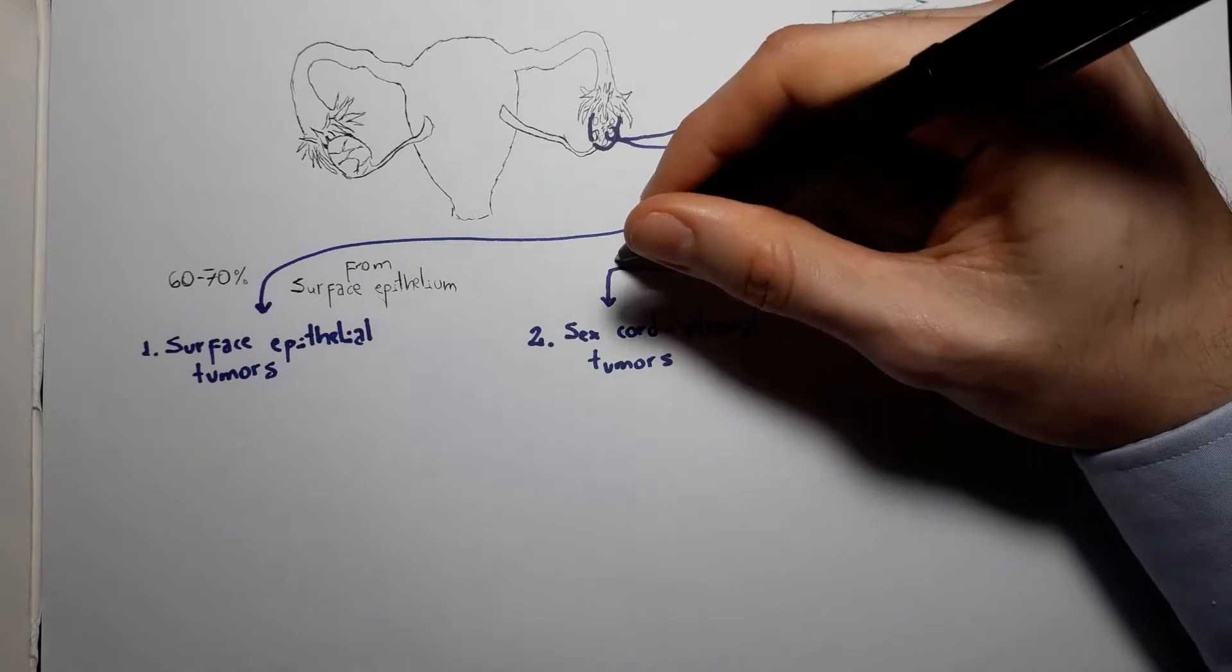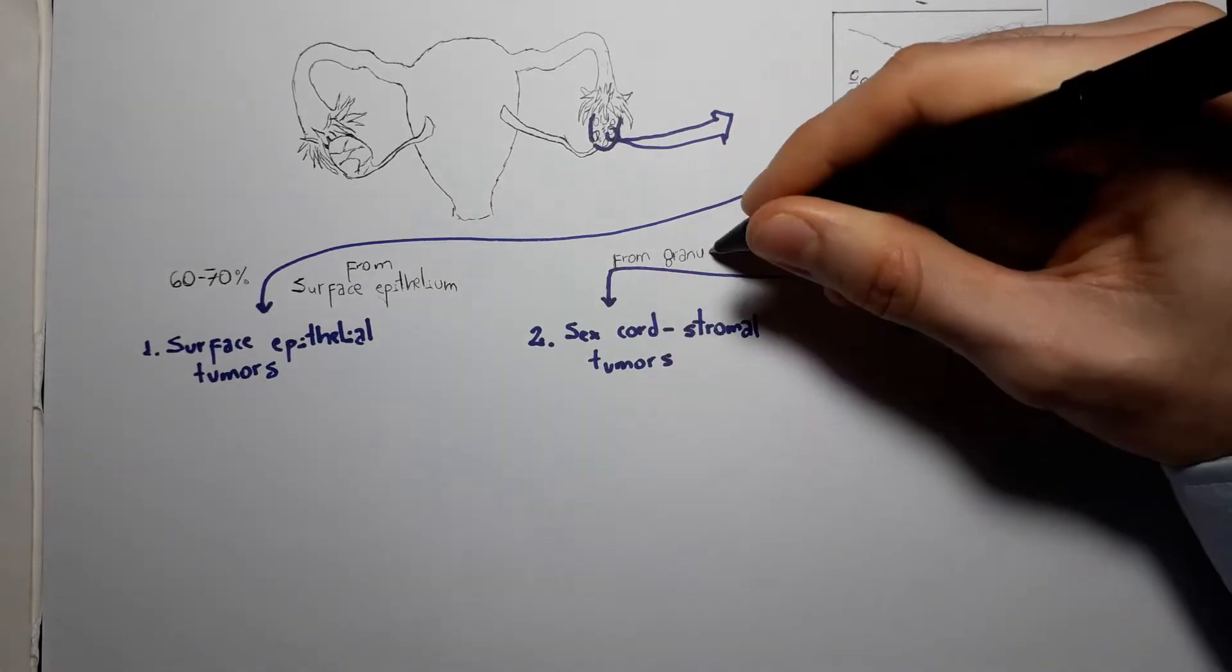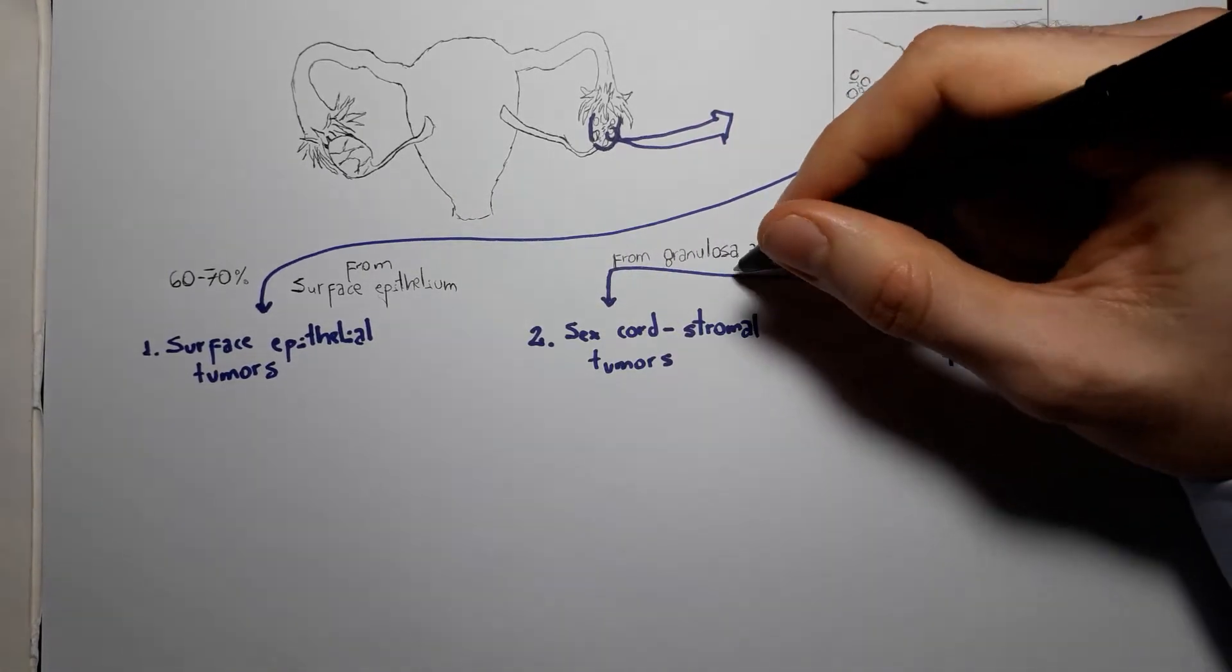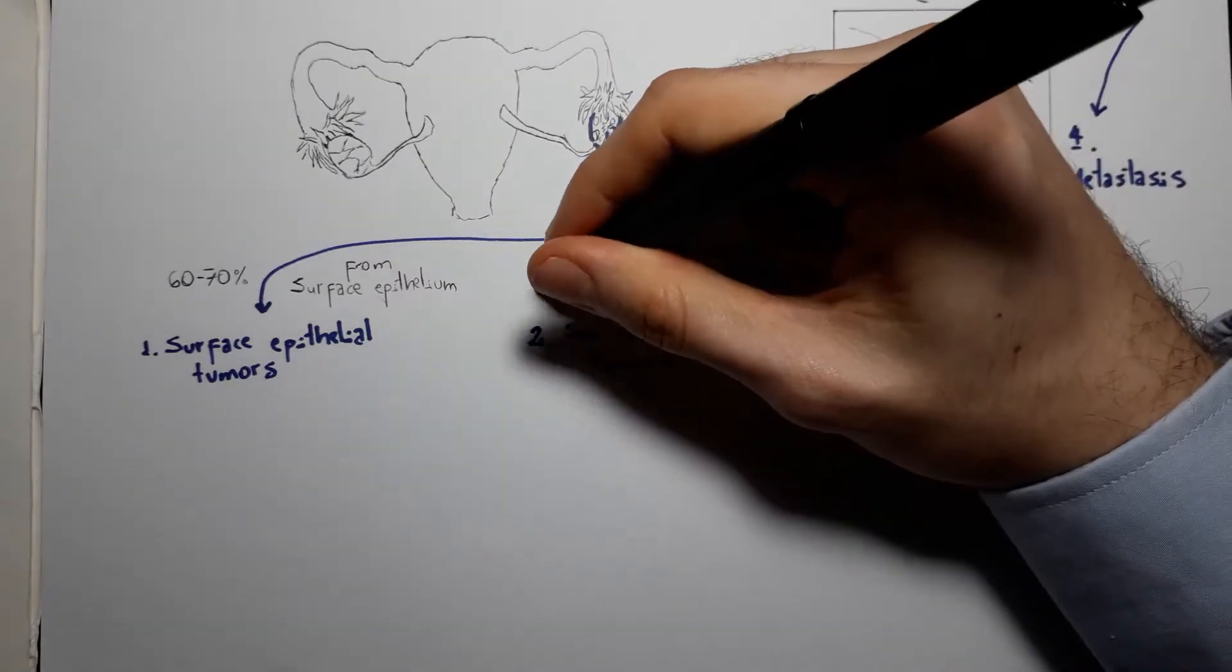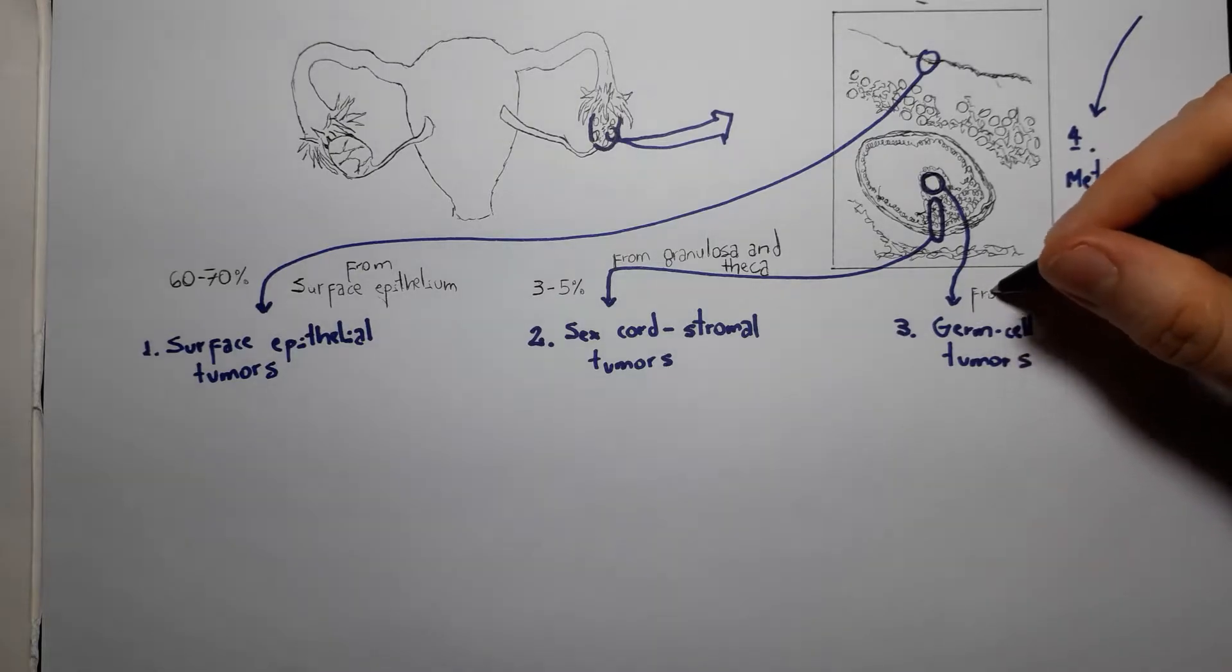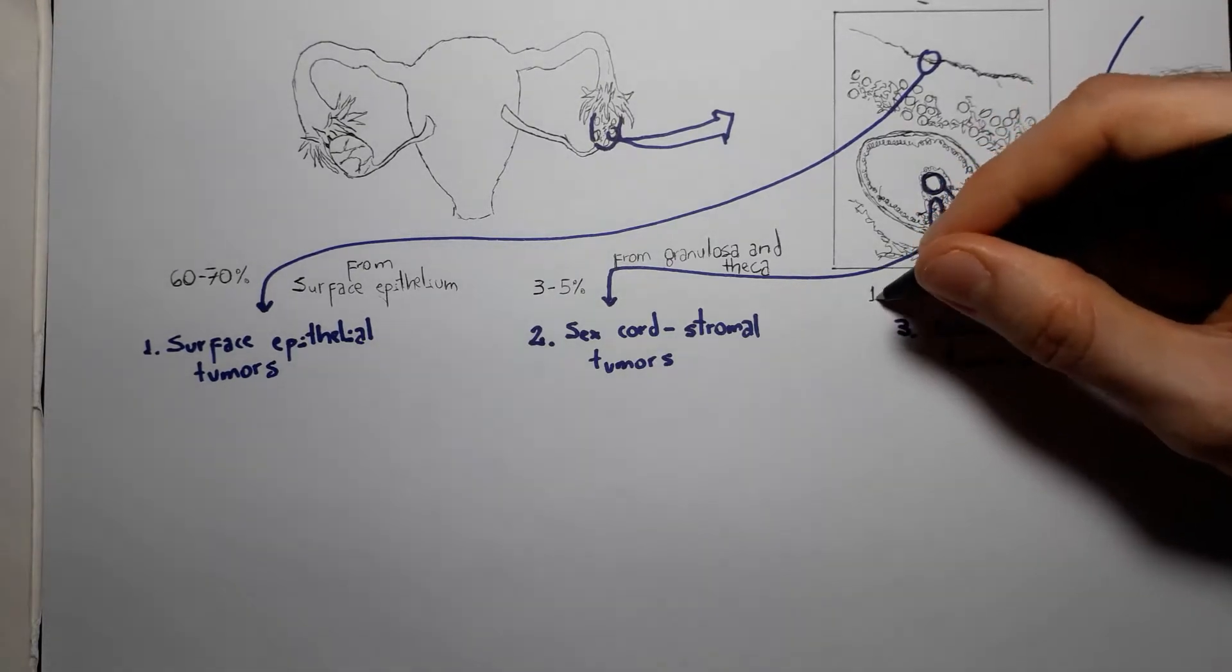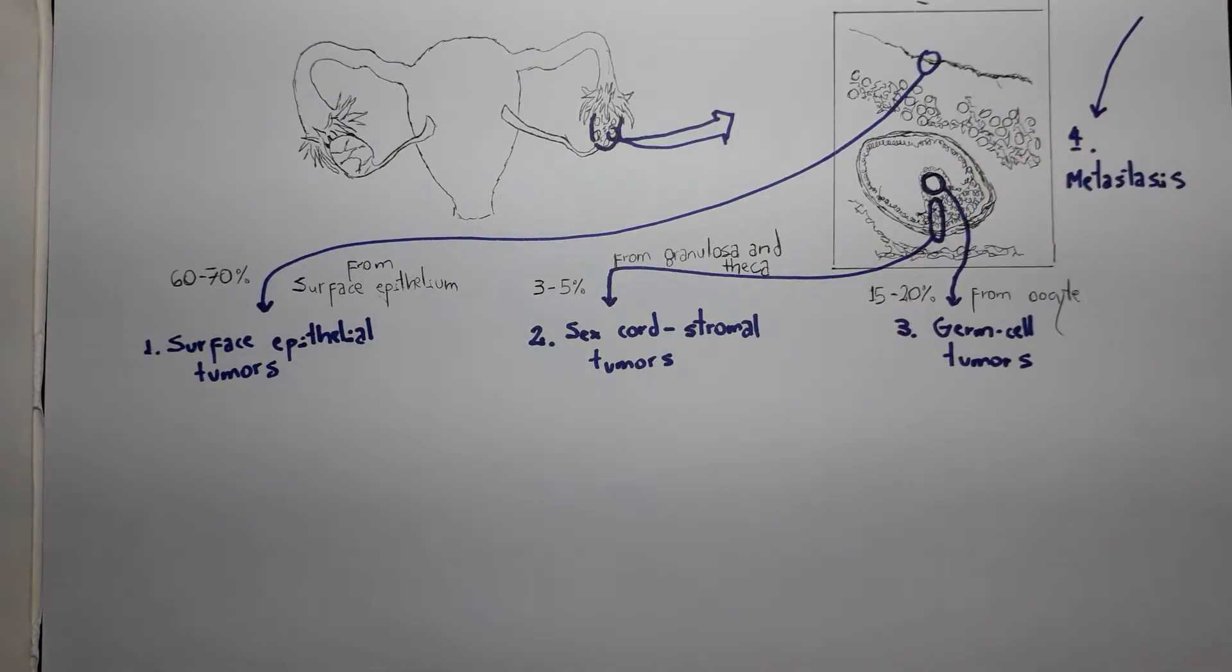Surface epithelial tumors are easily the most common, accounting for 60-70% of ovarian tumors. Germ cell tumors account for 15-20%, and sex cord stromal tumors correspond to 3-5%. Let's start with the surface epithelial tumors.